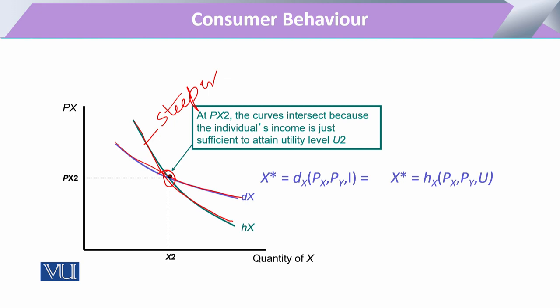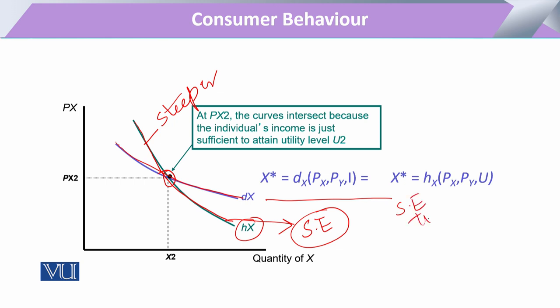The compensated demand function includes all compensation to the consumer for changes in real income. When we compensate for the change in real income, the income effect that the consumer faces due to the price change is neutralized. After that compensation, the actual response expressed by the consumer is only the substitution effect. So the Hicksian or compensated demand function exhibits only the substitution effect, unlike the Marshallian which captures both substitution and income effects.